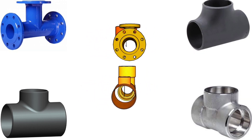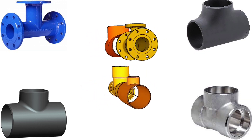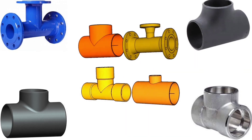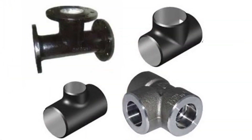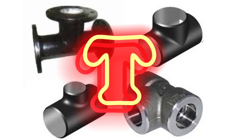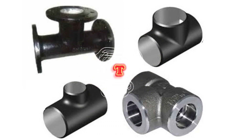Pipe tees are one of the most important fittings in pipe fabrication. A tee is a kind of pipe fitting which is used for dividing main flow into two streams. The shape of a pipe tee is like the English letter T, so we call it a tee. According to the type of end connections, tees are classified as follows.